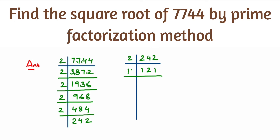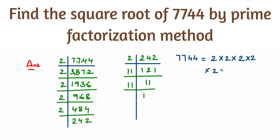11 elevens are 121, and the last step gives us 11. So 7744 can be written as 2 × 2 × 2 × 2 × 2 × 2 × 11 × 11.